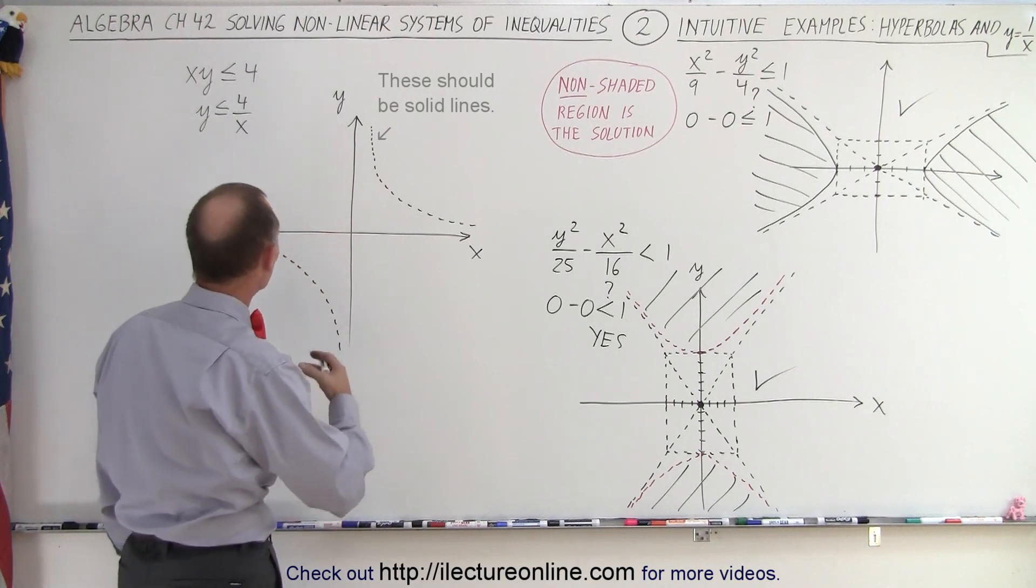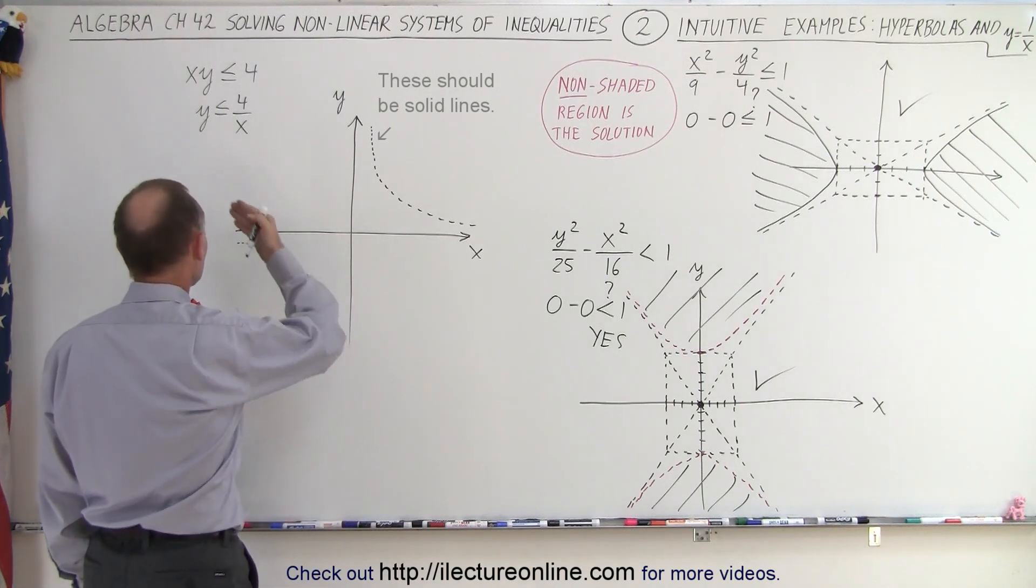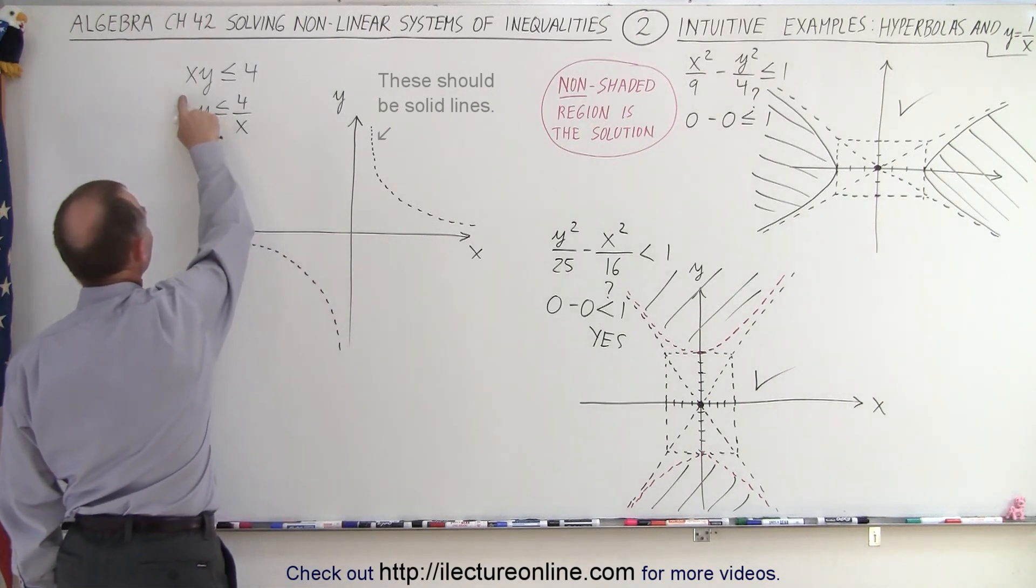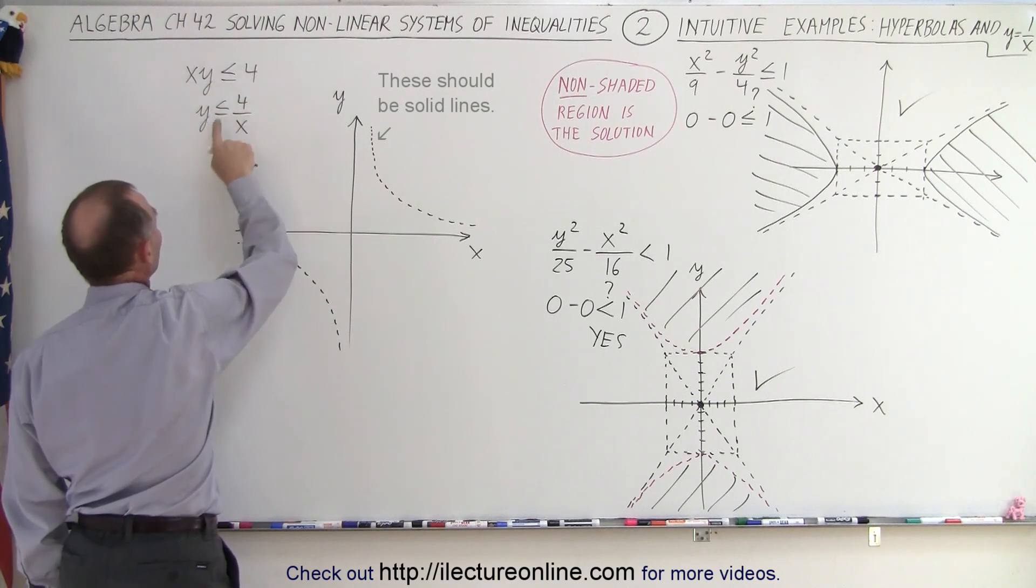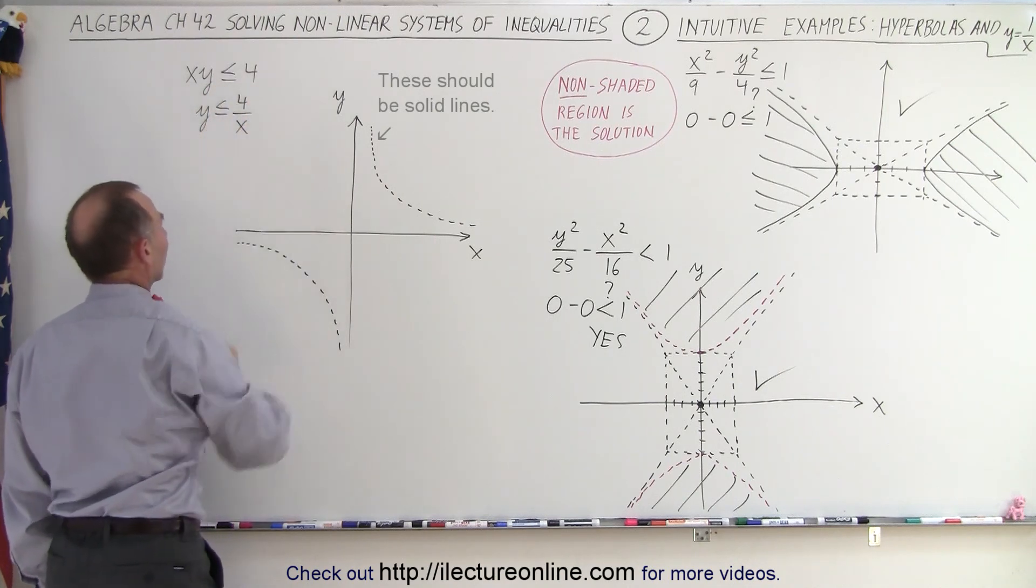What about a 1 over x type function? We have x times y less than or equal to 4, which can be written as y less than or equal to 4 over x.